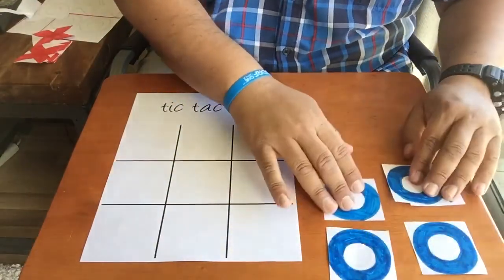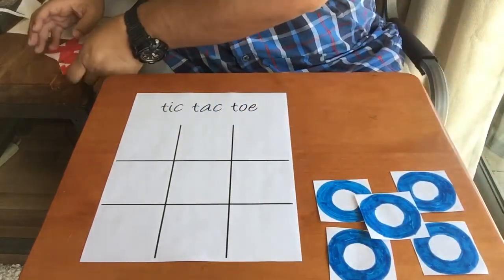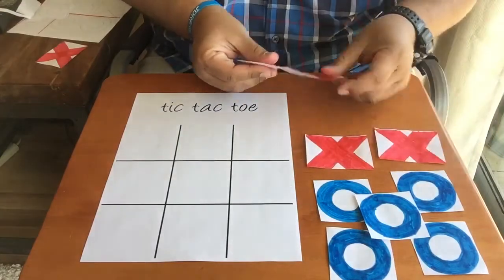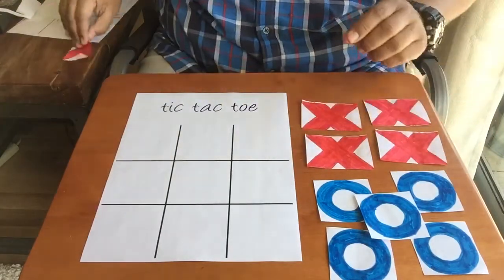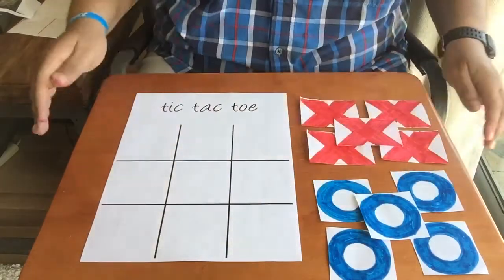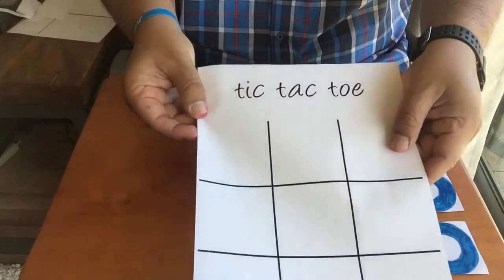You can see I actually have five letter O's and then I have my five letter X's. X's are red, O's are blue. And now you're ready to play. Don't forget you need your game board.